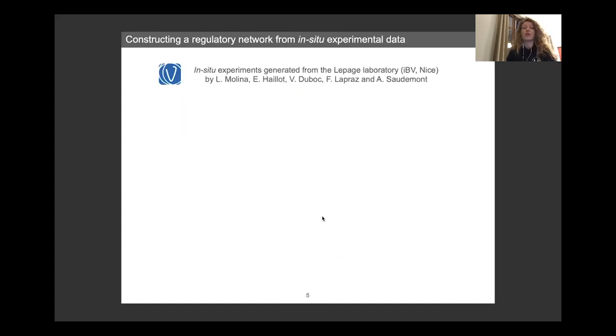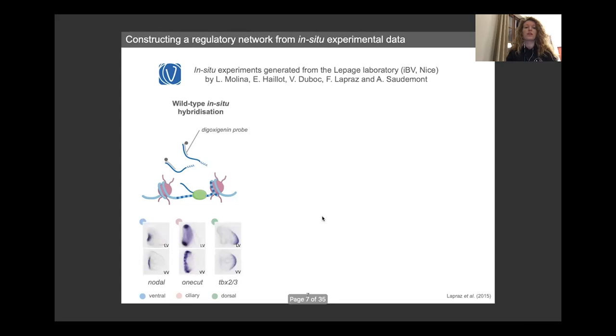So to do so, we've been working with in-situ experiments that have been generated from the Lepage laboratory at the Biology Institute of Valrose in Nice. And those experiments consist in in-situ hybridization, where we target specific genes with a digoxigenin probe and then you can see under the microscope where are these specific genes being expressed. So for example,